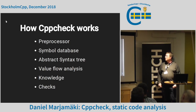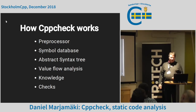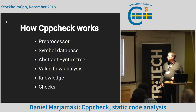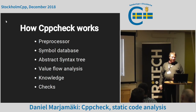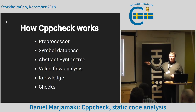How does CppCheck work? If you know compilers it's quite similar. There is a preprocessor, a symbol database that looks up all functions and handles all scopes and types, and we have an abstract syntax tree — those are all common compiler components. Value flow analysis is also common in compilers for optimizations. But in CppCheck we also have something called the library, where we store information about different functions and types. And the last piece is the checks. In terms of analysis time, the first three items take the most time — we don't spend most time in the checks.